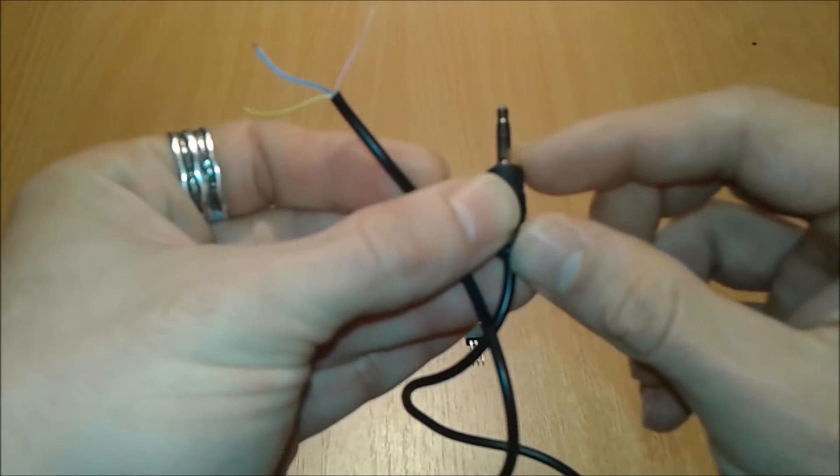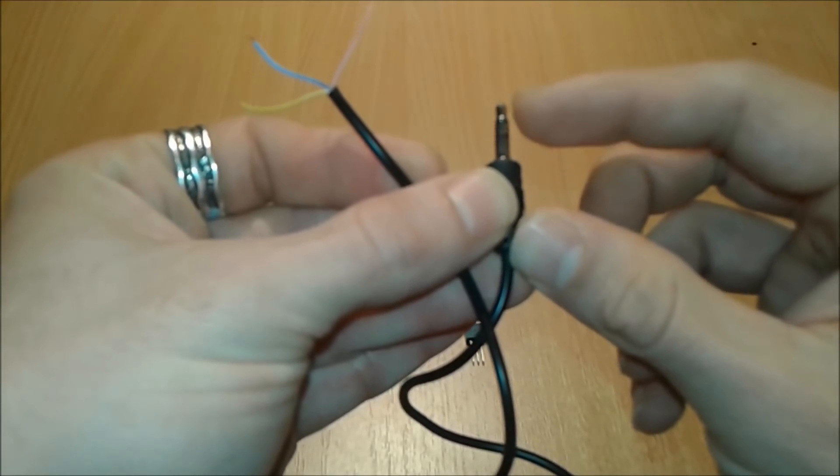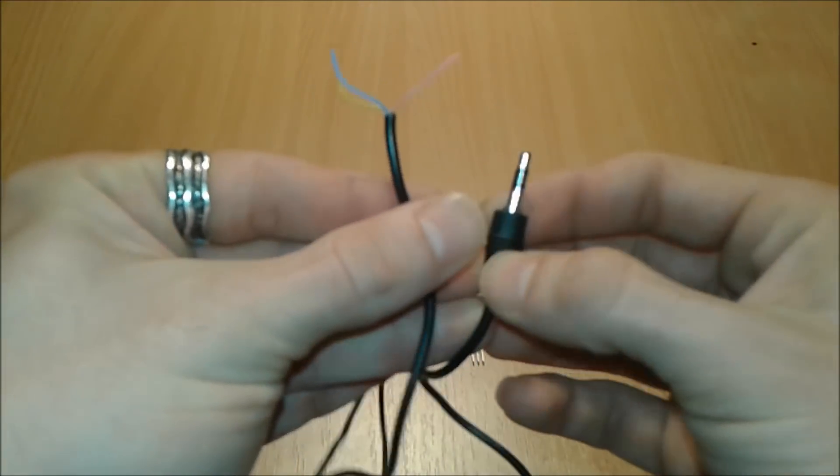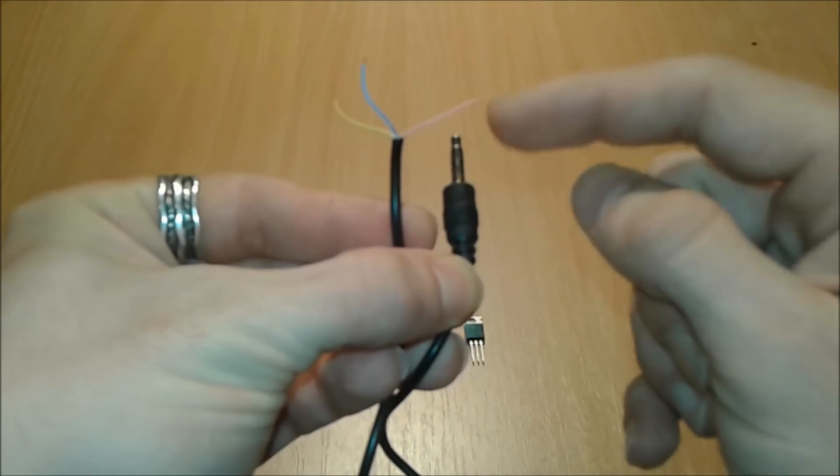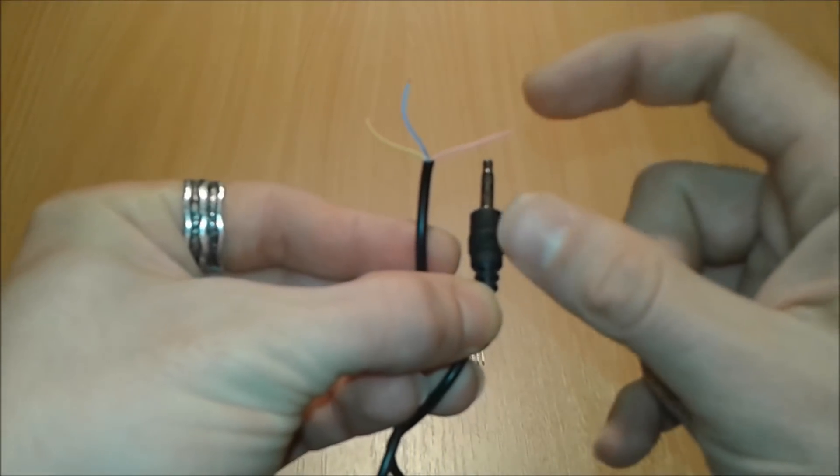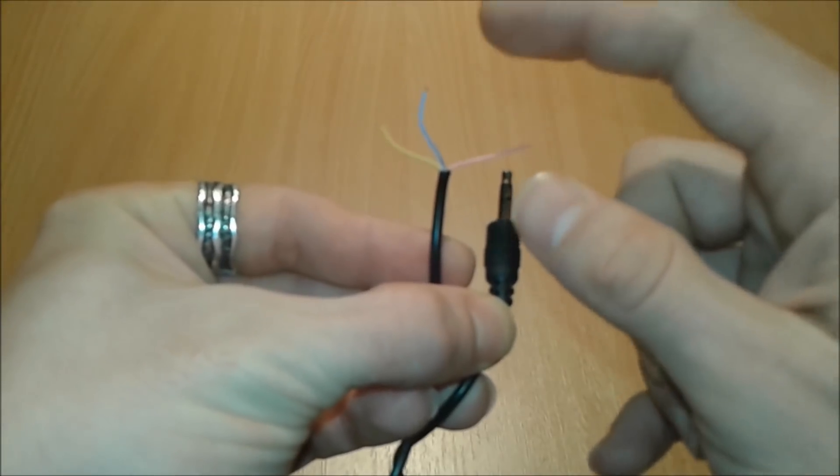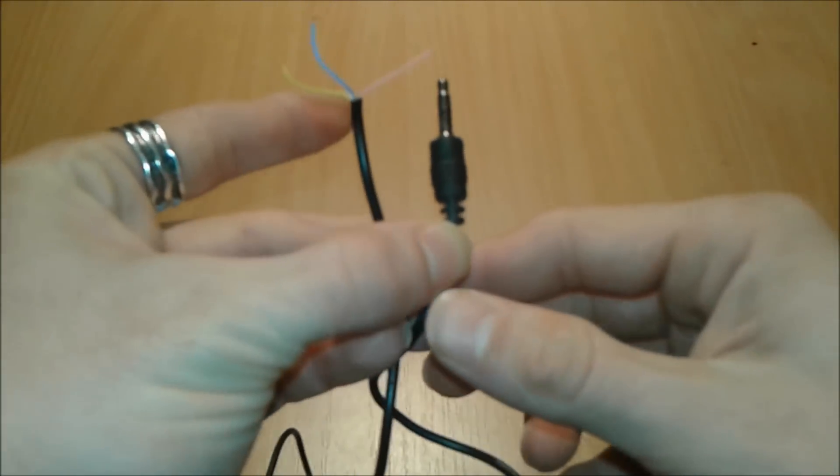This part here is gonna be the negative and those two is gonna be positive, and you have to use your multimeter to check continuity from this one to these pins to see which one is minus and which one is plus. A small tip.